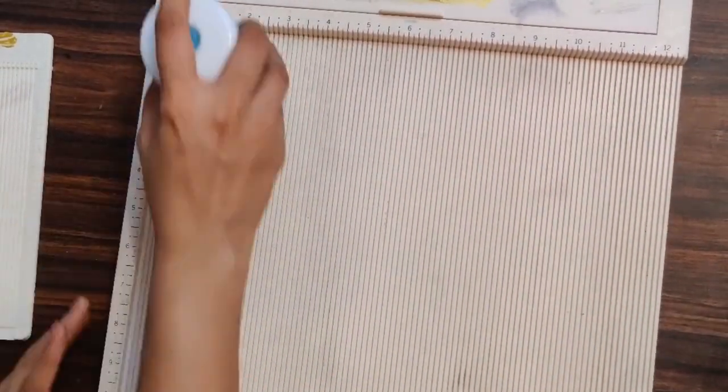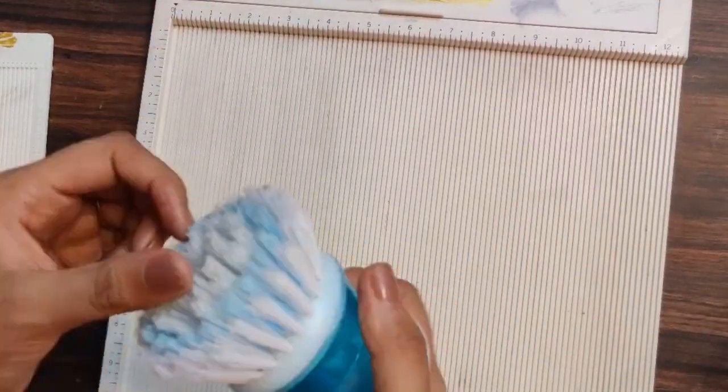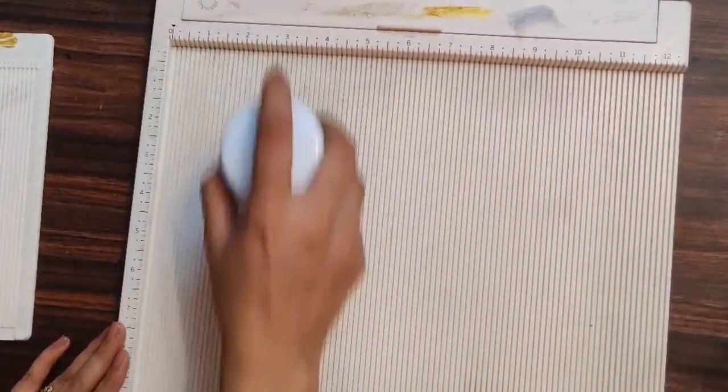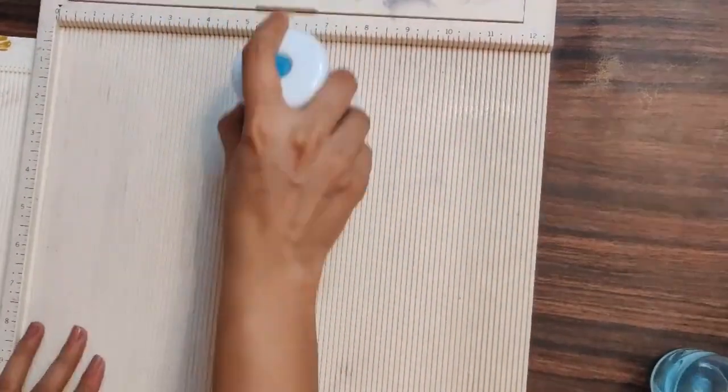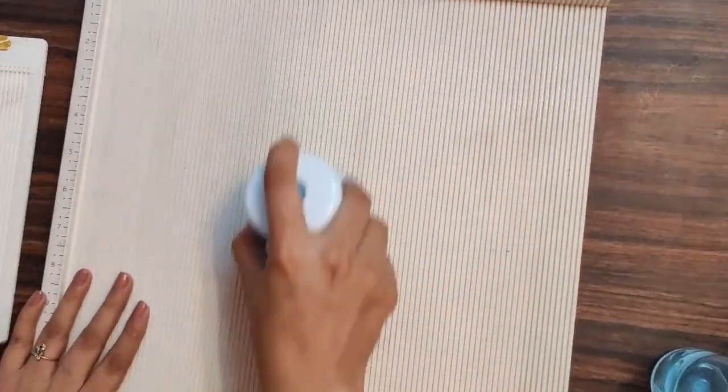And after that, if you want to remove the dirt, you can simply wash off your scoreboard under tap water and it would be clean. Now the question comes up: how to get rid of the glue gun marks?